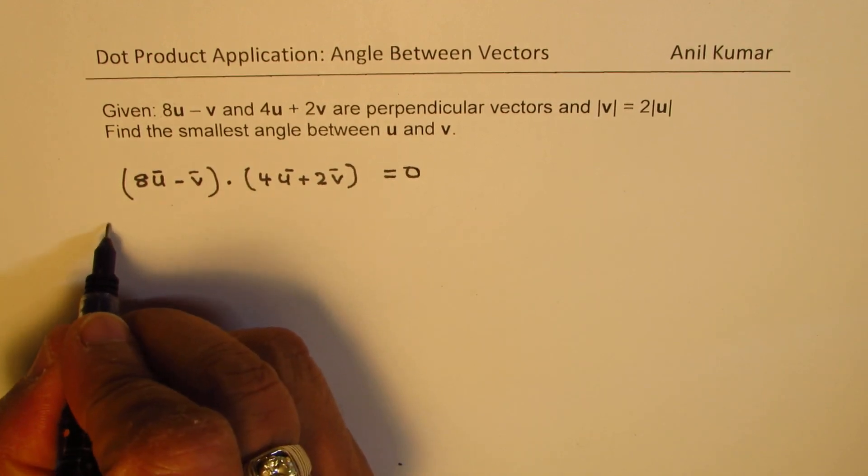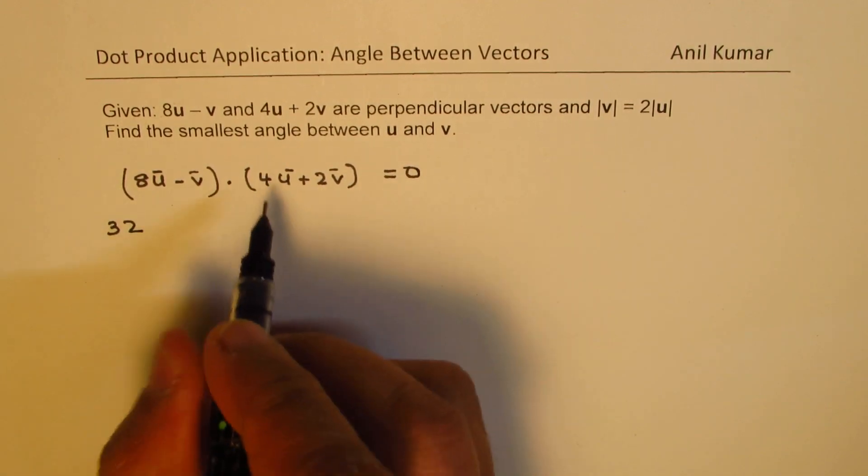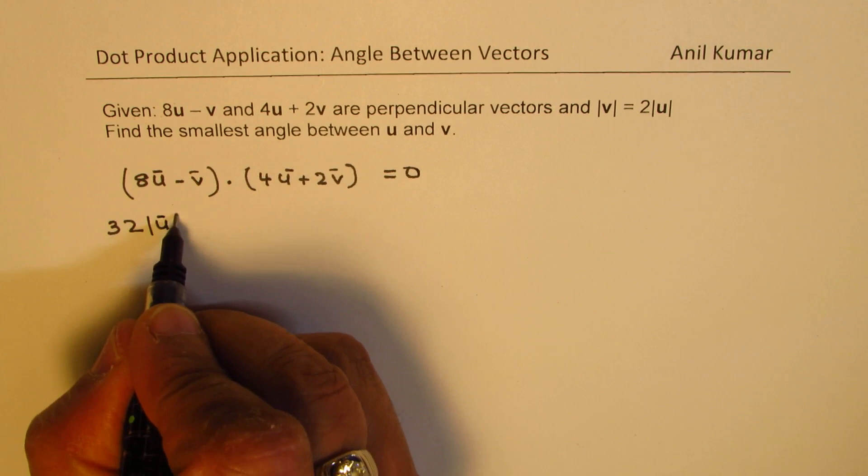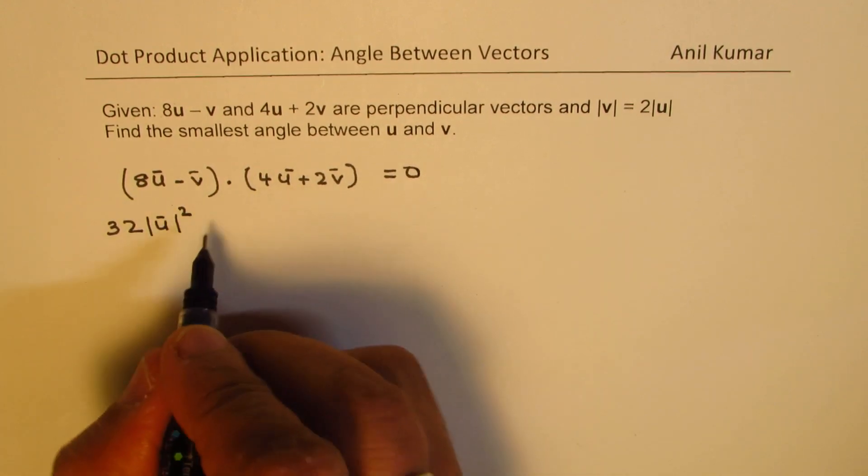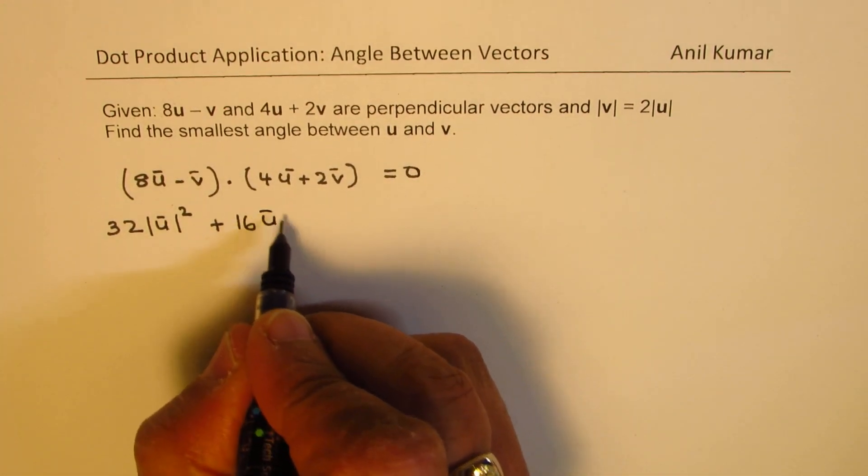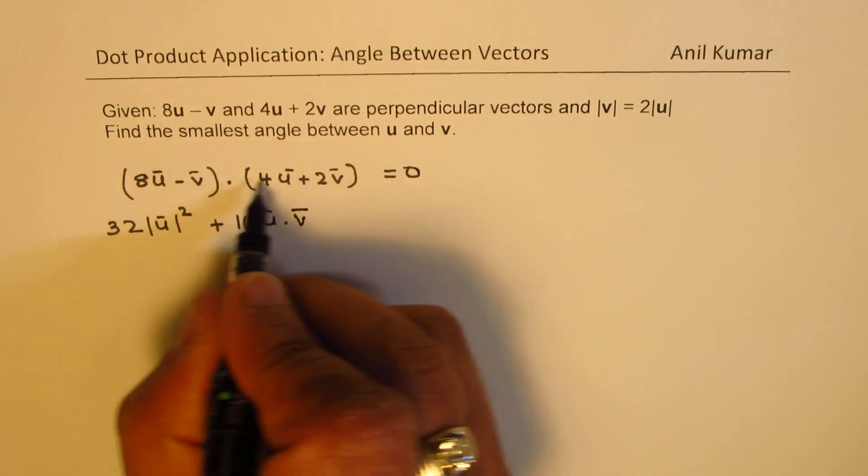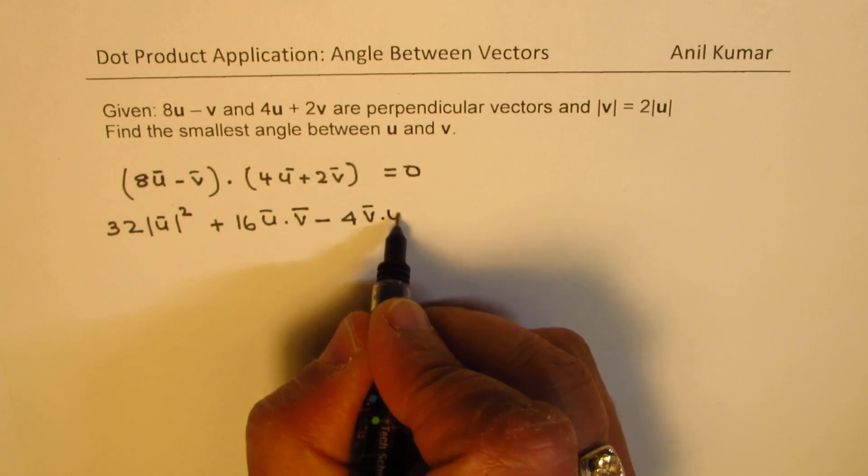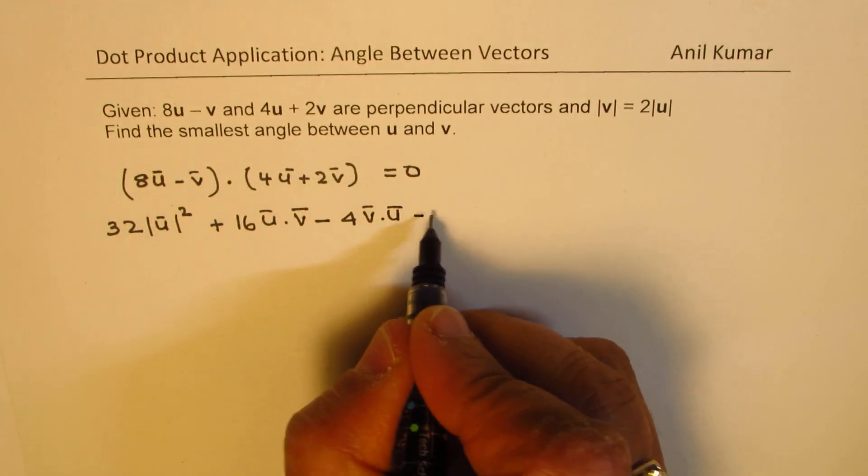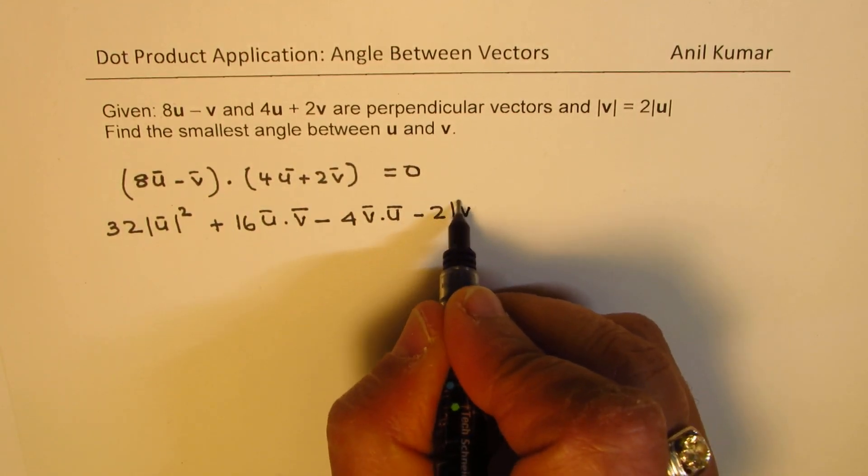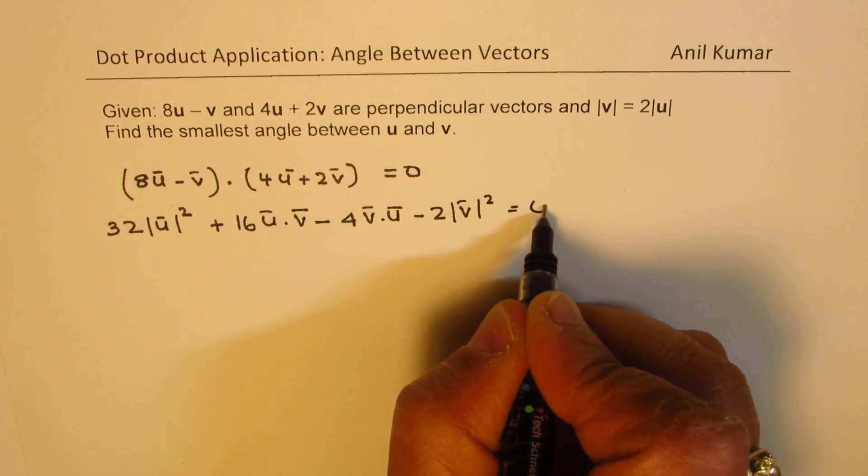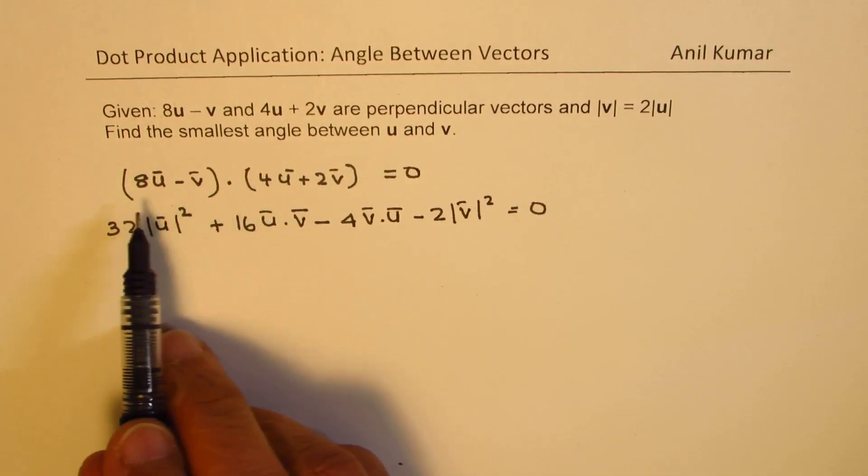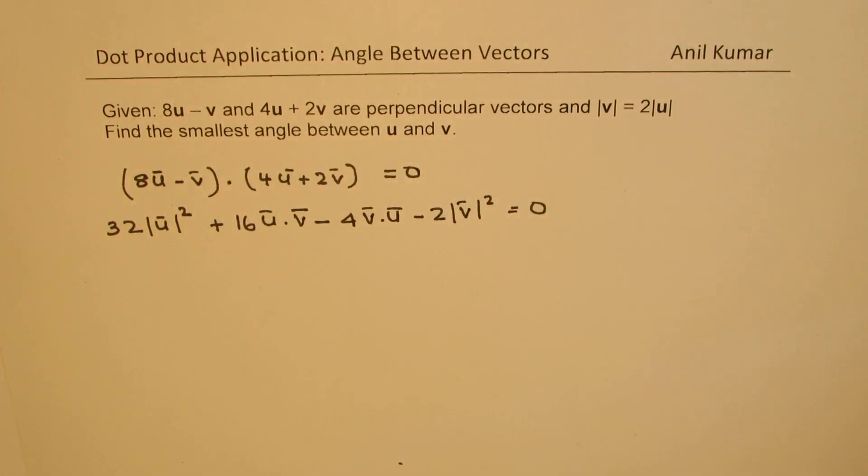8 times 4 is 32, so we get 32 magnitude of u squared, and then we have plus 16 u dot v. And then we have minus 4v dot u, and we get minus 2 magnitude of v squared equals zero. So u dot u is magnitude of u squared, v dot v is magnitude of v squared.